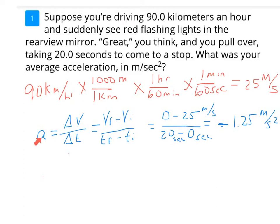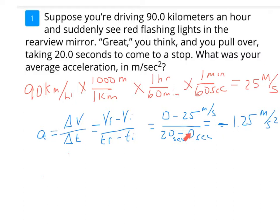To calculate acceleration, we take the change in velocity divided by the change in time. Our final velocity is zero and our initial velocity is 25 meters per second, so the change in velocity is 0 minus 25, giving negative 25 meters per second. Our change in time is 20 minus 0, giving 20 seconds. So we have negative 25 meters per second divided by 20 seconds, meaning the acceleration needed to stop the car is negative 1.25 meters per second squared.